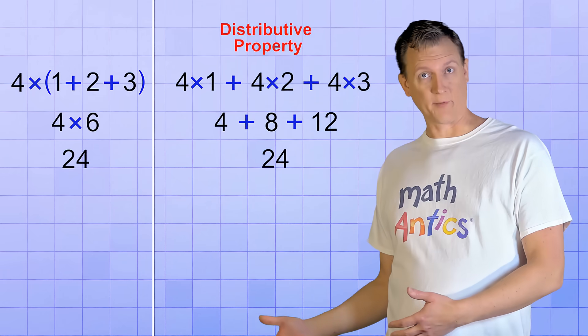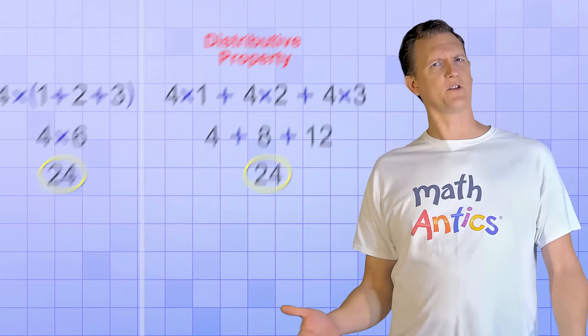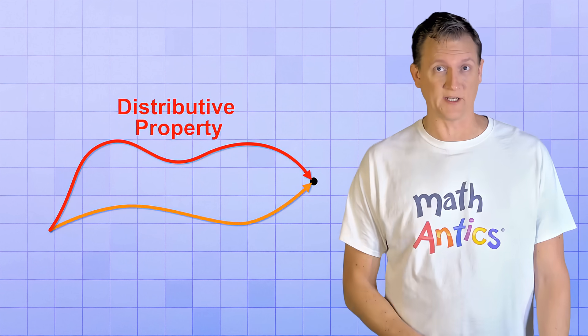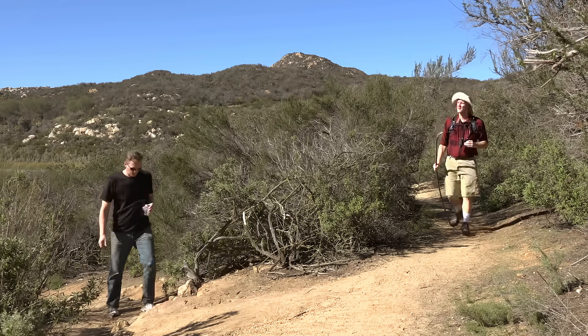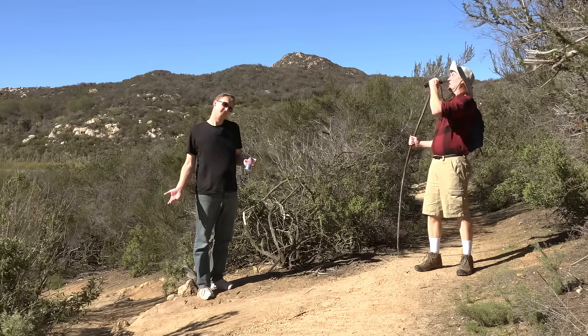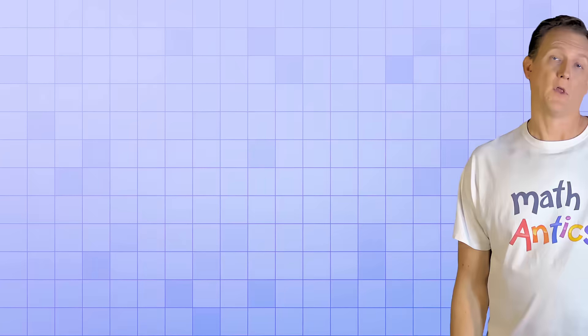See? The Distributive Property gave us another way to arrive at the same answer. It's like the Distributive Property is an alternate path that you can take to arrive at the same point.